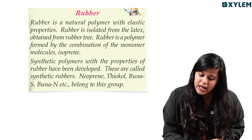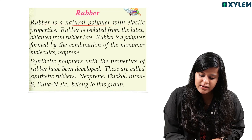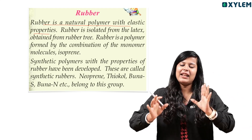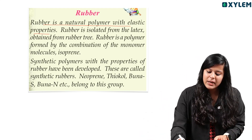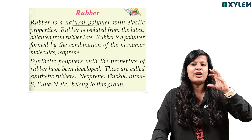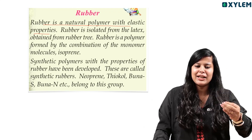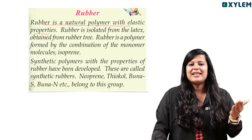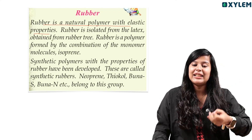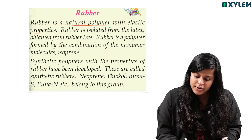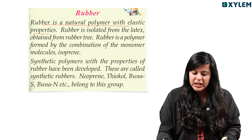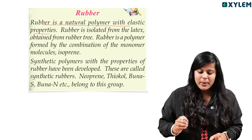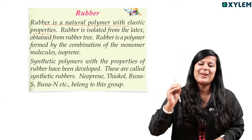Rubber is a natural polymer with elastic properties. Rubber is isolated from the latex obtained from the rubber tree. Rubber is a polymer formed by the combination of polymer molecules of isoprene. It is a natural polymer.